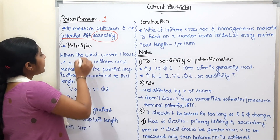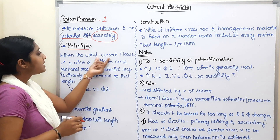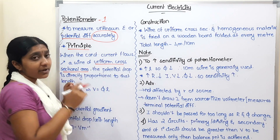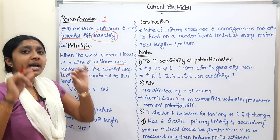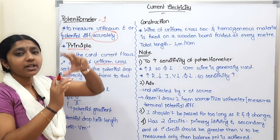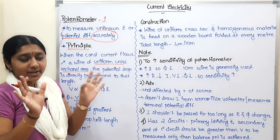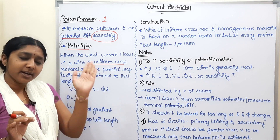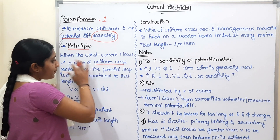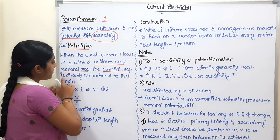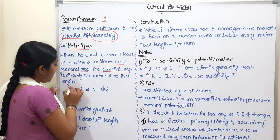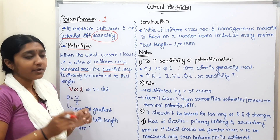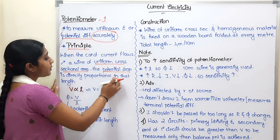What is a potentiometer? When a constant current flows through a wire of uniform cross-sectional area, the potential drop is directly proportional to the length of that wire.